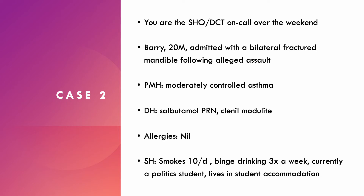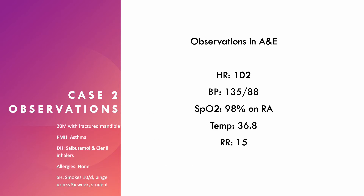You want to think about what investigations to get, how to assess this patient, and what analgesia would be best to prescribe. Observations at A&E: heart rate 102, blood pressure 135 over 88, oxygen saturations 98% on room air, temperature 36.8, respiratory rate 15. The patient is tachycardic and the blood pressure is probably a little high for someone this age.